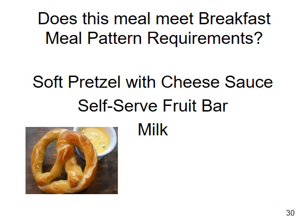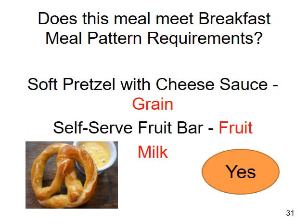The last example is a soft pretzel with cheese sauce, a self-serve fruit bar, and milk. Does this menu meet the planned meal pattern requirements? Yes — the soft pretzel counts as a grain. The cheese sauce would credit as a meat-meat alternate if I had a child nutrition label or it was homemade with documentation. The student could select a one-cup portion of fruits from a self-serve bar, and a carton of milk completes the meal.